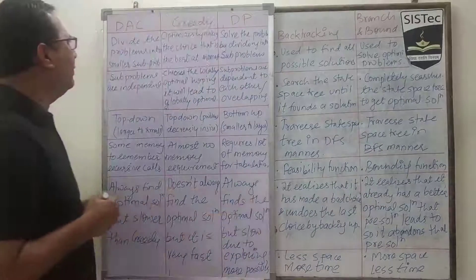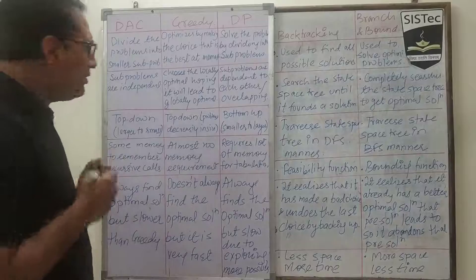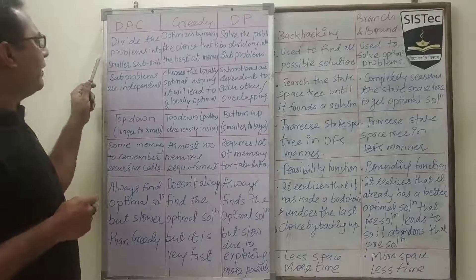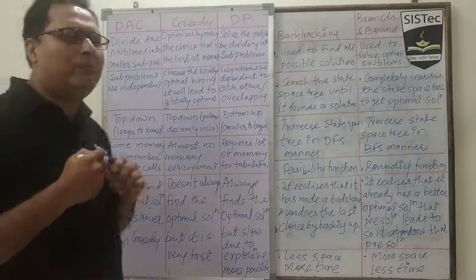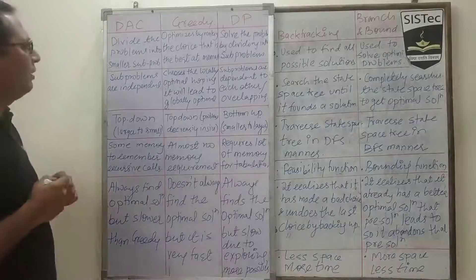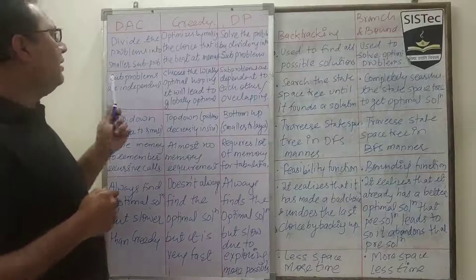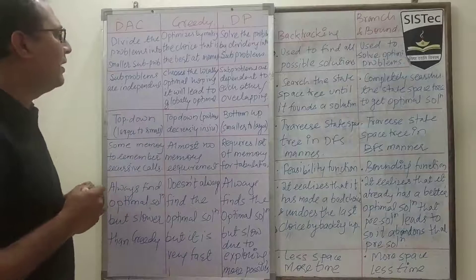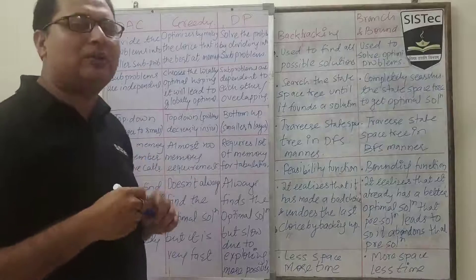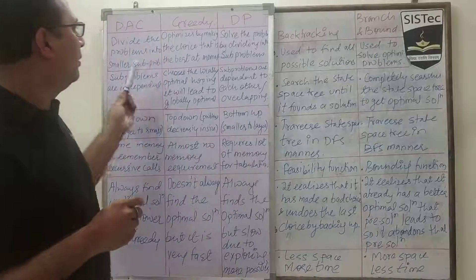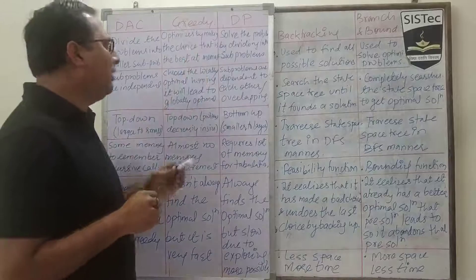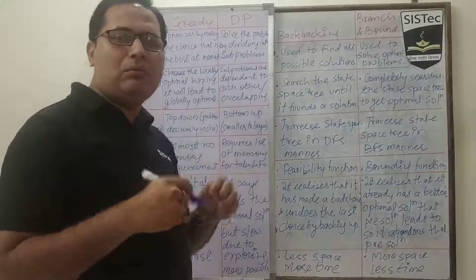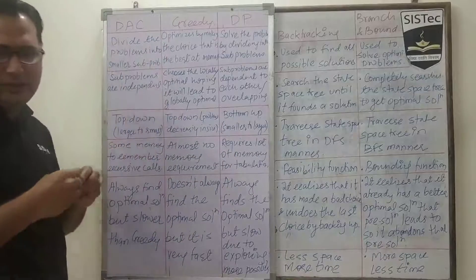Starting with divide and conquer, greedy and dynamic programming. The first point of discussion: divide and conquer divides the problem into smaller subproblems, as we have seen in various problems solved using divide and conquer. Whereas greedy optimizes by making the choice that is the best at the moment — it always works on the local best. In the case of dynamic programming, it also solves the problem by dividing it into subproblems.